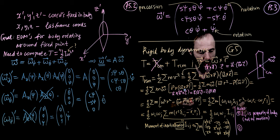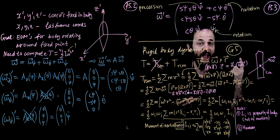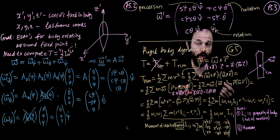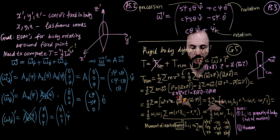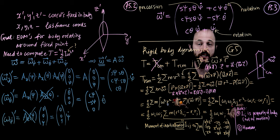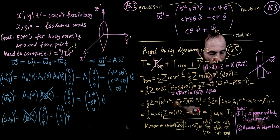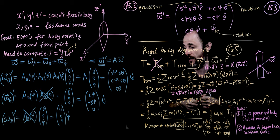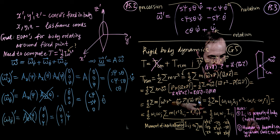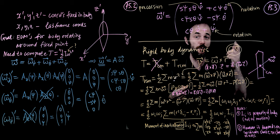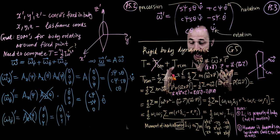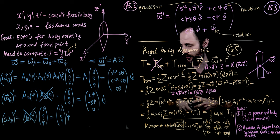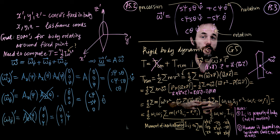Two useful notes: first, I_ij, the moment of inertia tensor, is a property of the body — it doesn't depend on the motion, only on the distribution of masses in space. Second, it does depend on the choice of coordinate axes within the body, since different orientations of x, y, z give different components in the matrix. This concludes part 3; next we discuss how I_ij transforms between coordinate systems in part 15.4.